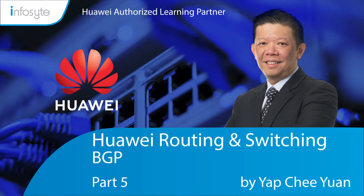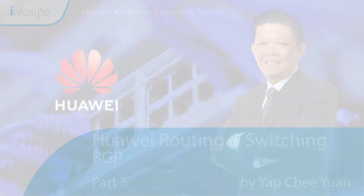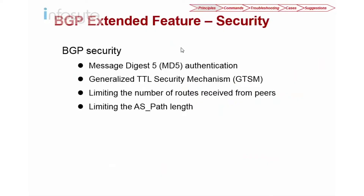Welcome back to Hallway Routing and Switching Elite Training for HCIE. Today's topic is BGP, starting Part 5. To provide security for BGP, we have four methods: Message Digest (MD5), GTSM (Generalized TTL Security Mechanism), limiting the number of routes received from a peer, and limiting the number of AS Path lengths.